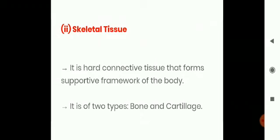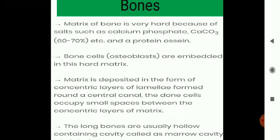Next is supportive connective tissue, also known as skeletal tissue. It is a hard connective tissue that forms the supportive framework of the body and provides body shape. It includes bones and cartilage. Bone is a rigid and hard porous tissue. Bone cells are called osteocytes, which are star-shaped, and each cell is enclosed in a small cavity called a lacuna. Bone has a good supply of blood vessels and nerves and consists of inorganic salts and living cells. The matrix of bone is very hard due to the presence of calcium phosphate and calcium carbonate.